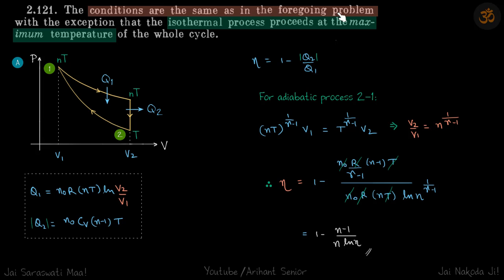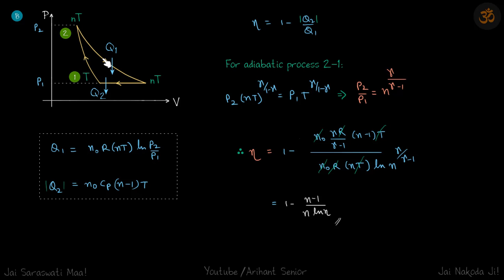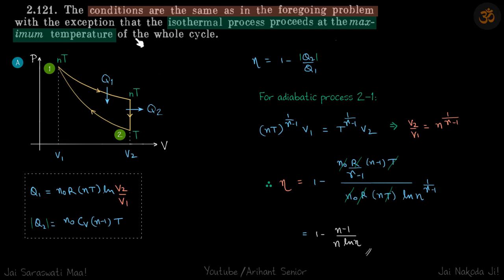The conditions are the same as in the foregoing problem, except that the isothermal process proceeds at maximum temperature. This is the isothermal for the first part, and this is the isothermal for the second part — so the isothermal proceeds at higher temperature. Temperature varies n times, so these two are nT, and here also, if this is T, these two are nT. The rest of the process is the same — to find the efficiency.